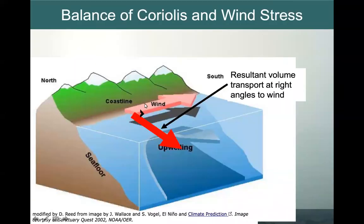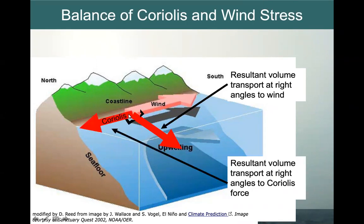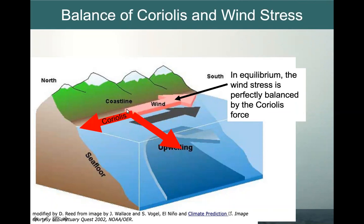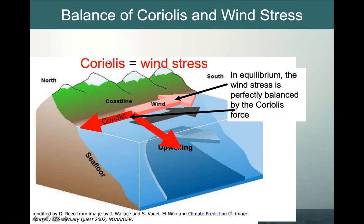The resultant volume transport is going to be at right angles to the wind. With the water moving in that direction, and being in the Northern Hemisphere on a rotating earth, Coriolis acts on the water, also pulling at a right angle to the volume transport. So once we get to an equilibrium state, the wind stress going in one direction and Coriolis perfectly balance in the opposite direction — Coriolis will be equal and opposite to the wind stress.